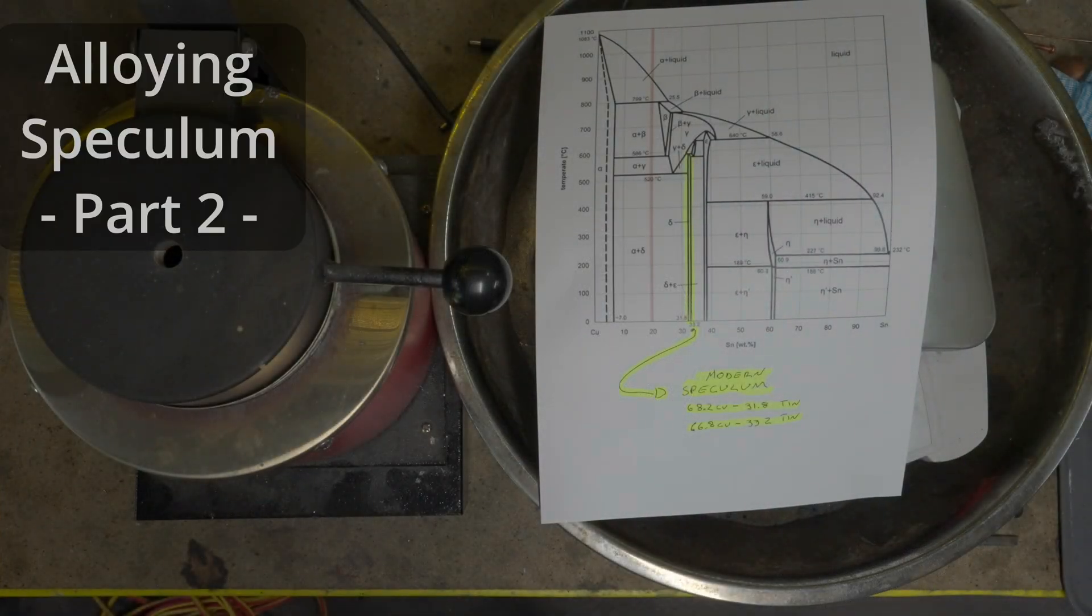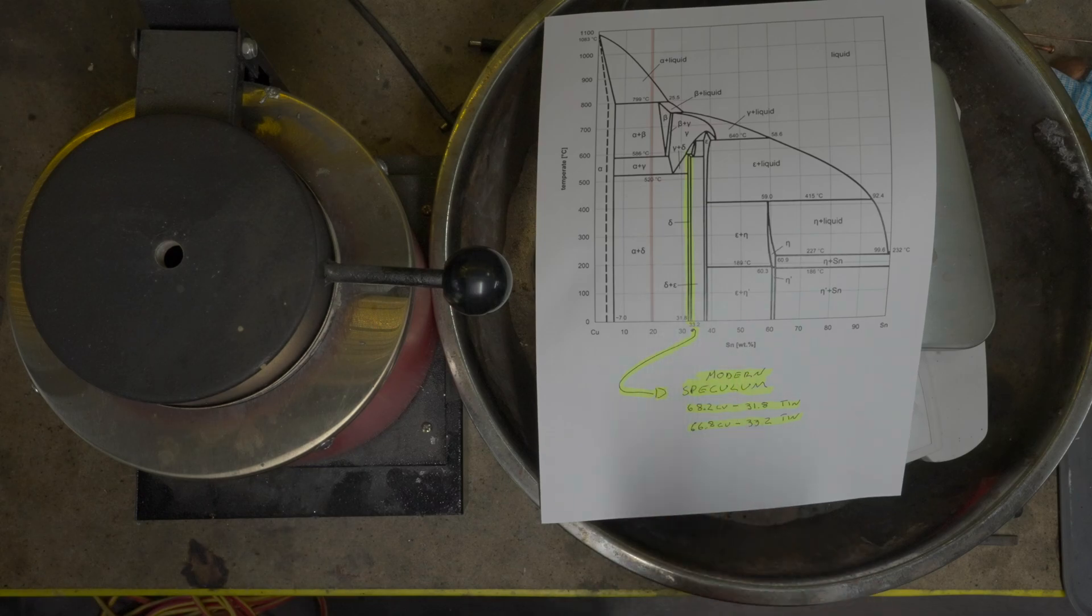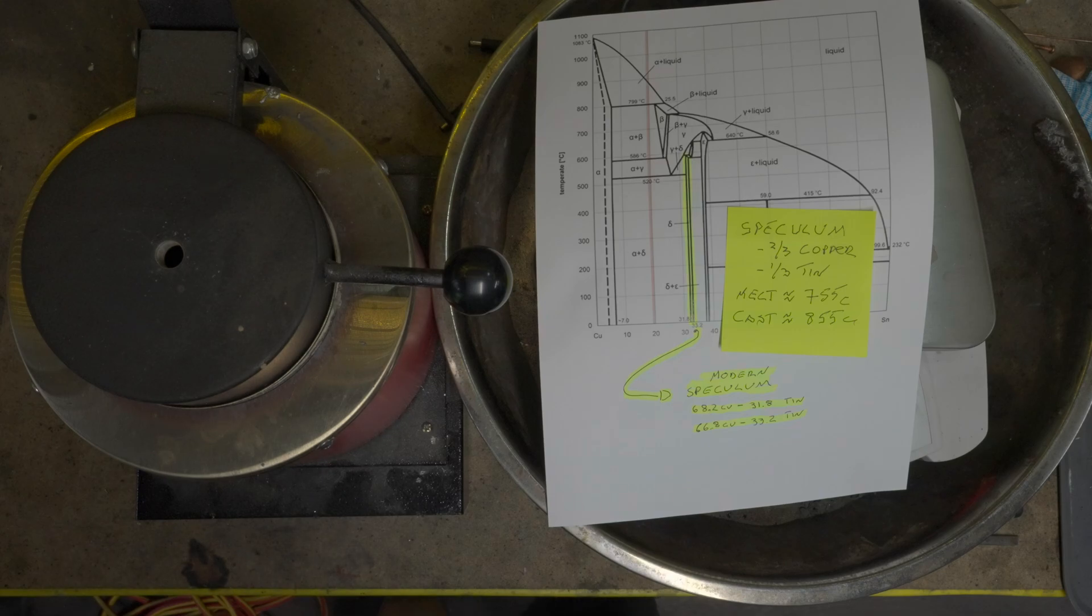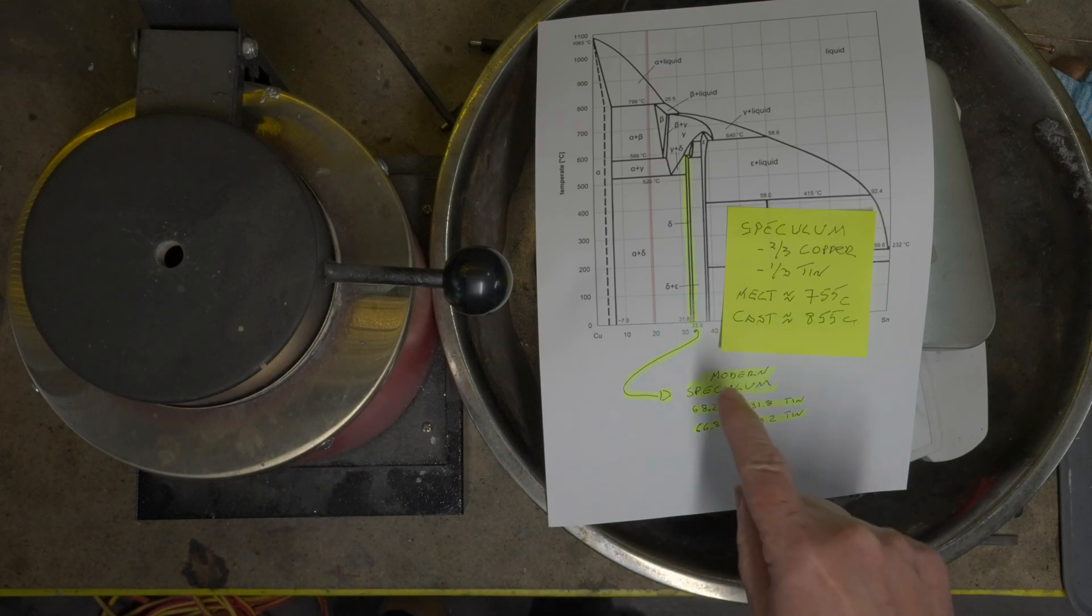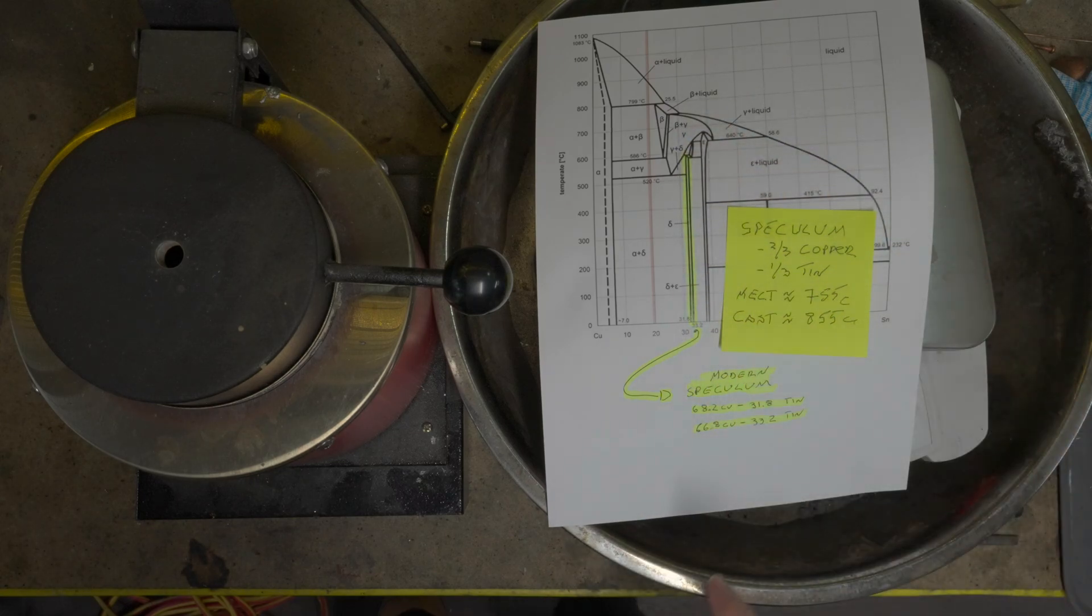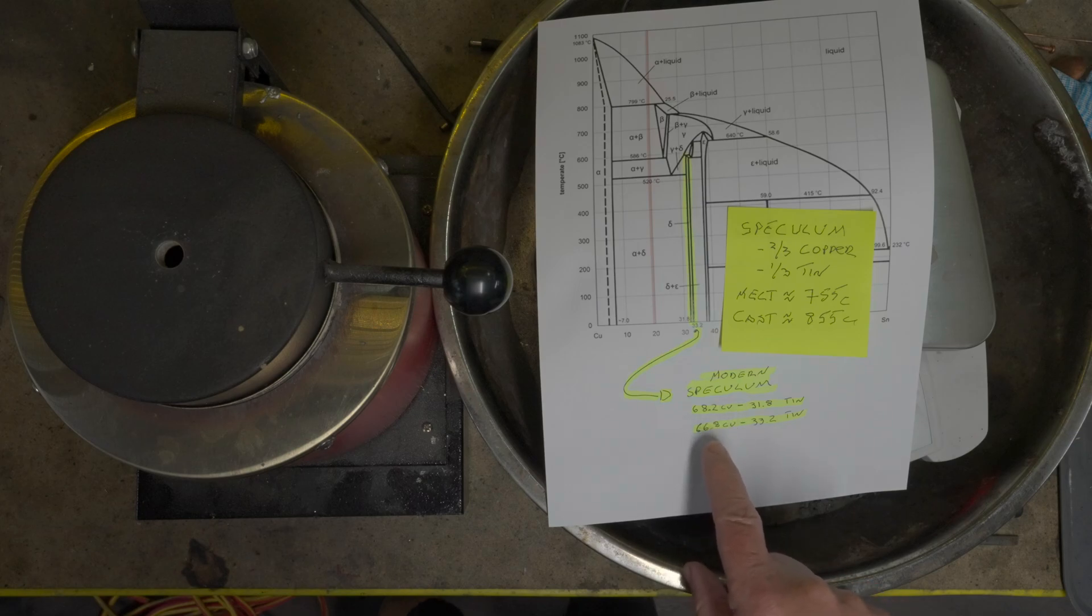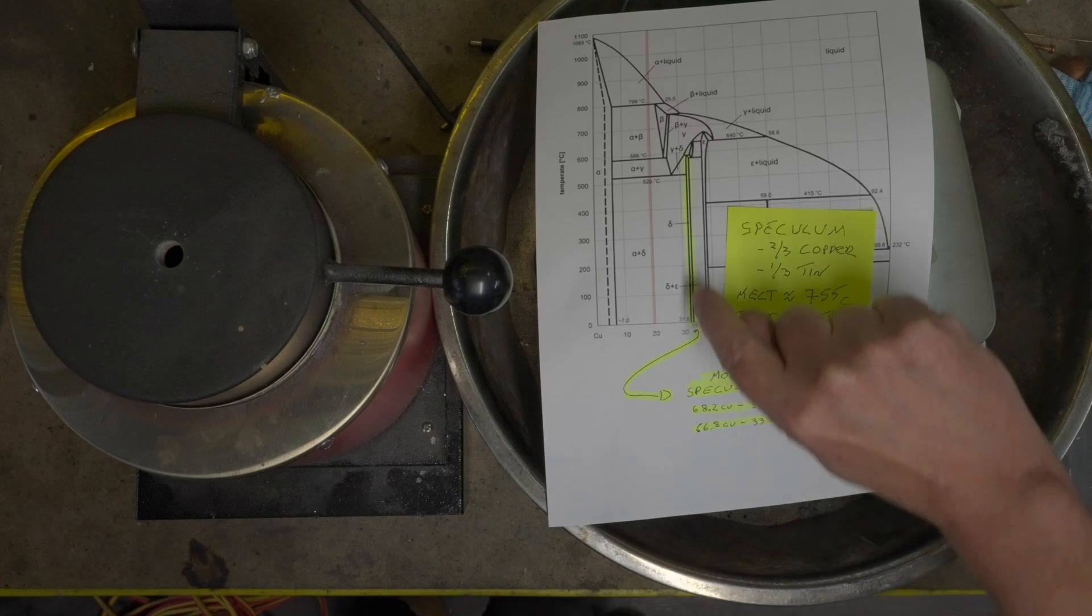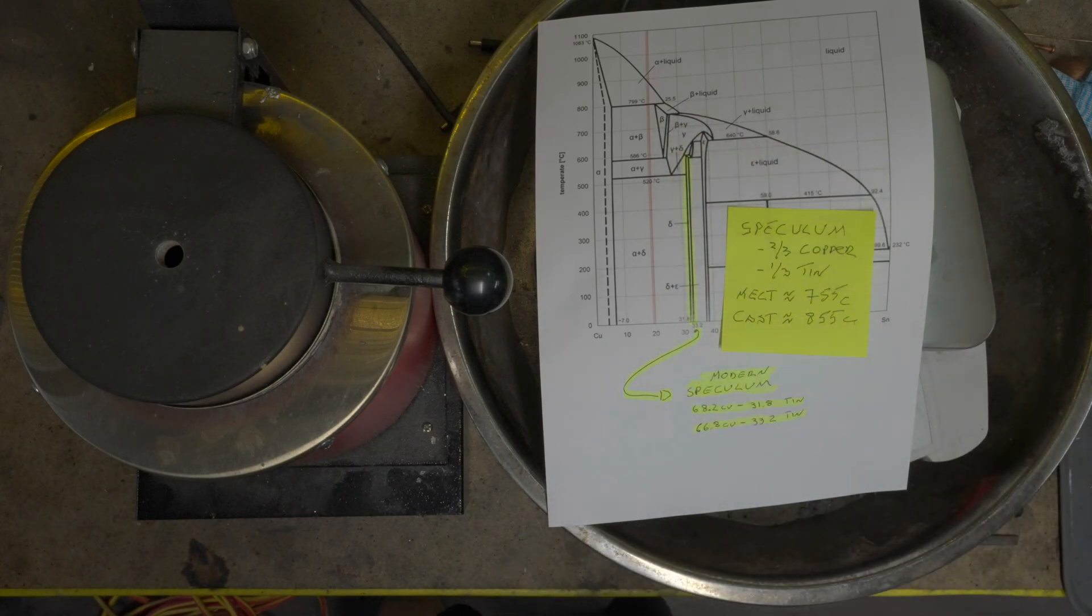We're going to try casting speculum again. I'm going to change the formula just slightly. I found the phase diagram and did some more digging. With the ancient formula it was just about two-thirds copper and one-third tin. But it turns out with modern speculum in the phase diagram we're after this little thin band here. So somewhere between 68.2% copper down to 66.8% copper balanced tin gets you this little fine line here. And that's what they're aiming for.